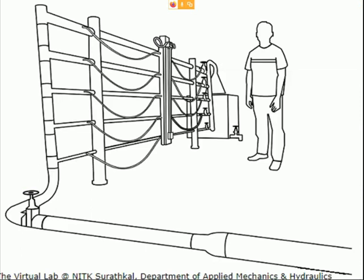Here we can see the diagram of the apparatus used. There are different pipes of different cross-sectional areas with which a manometer is connected. The main inlet valve is at the bottom left of the diagram, and there is a collecting tank where a person is standing.